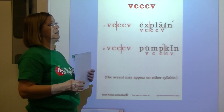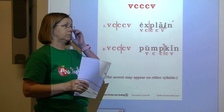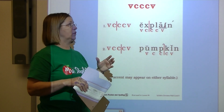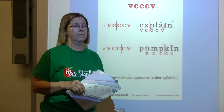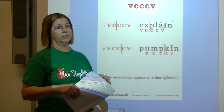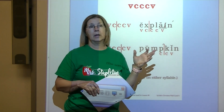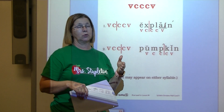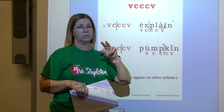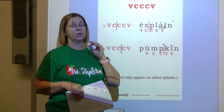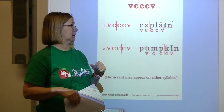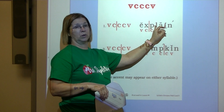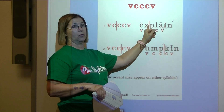We also have the VCCV pattern where you label the vowels and consonants as always, but then look to see if you have a blend or a digraph in those three consonants. If you do, don't divide between the two letters of the blend or digraph. For example, PL is a blend, so we don't divide between P and L — we put the division before the P.